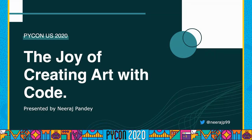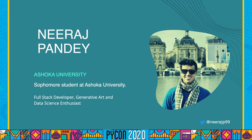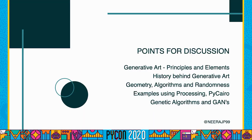Hi, I'm Neeraj and this is the joy of creating art with code. A little bit about myself — I'm currently a sophomore student at Ashoka University where I'm pursuing computer science. The points for discussion are generative art, its principles and elements, the history behind generative art, the geometry, algorithms and randomness that frame our generative art. We'll be seeing a lot of examples using Processing and PyCairo, and we'll be ending the talk with genetic algorithms and GANs.